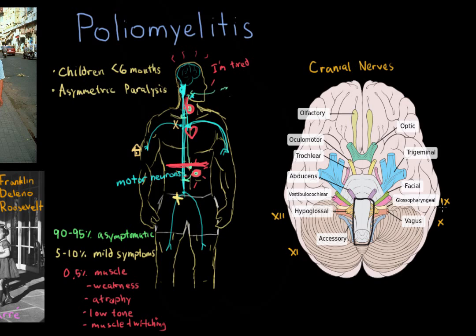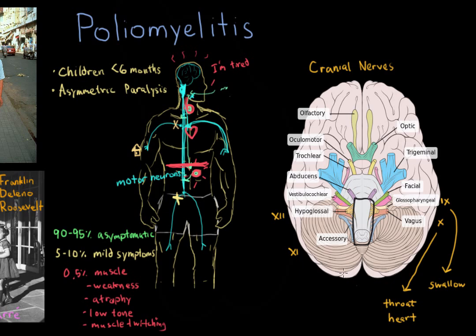The glossopharyngeal nerve assists in swallowing, so patients may have difficulty swallowing. The vagus nerve controls movement of the throat — essential for speech — and also innervates the heart muscle, so patients with affected cranial nerves should have close cardiovascular monitoring. The accessory nerve controls shoulder movement, and the hypoglossal nerve controls tongue movement.